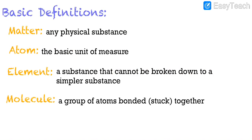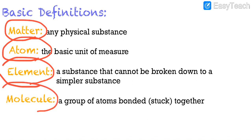Here are a few basic definitions. In chemistry, we refer to any physical substance as matter. An atom is the basic unit of measure in chemistry. An element is a substance that cannot be broken down to a simpler substance. And a molecule is a group of atoms bonded or stuck together.